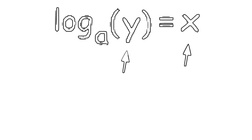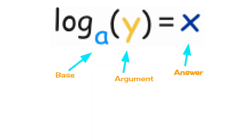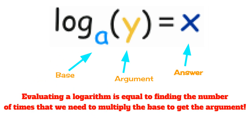Logarithm base a of y is equal to x. In this example, the base is a, the argument is y, and the answer is equal to x. Evaluating a logarithm is equal to finding the number of times that we need to multiply the base to get the argument.